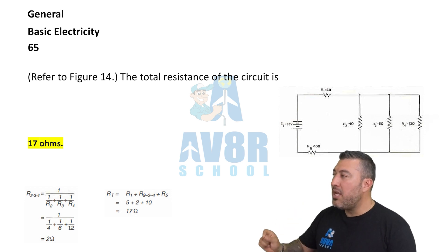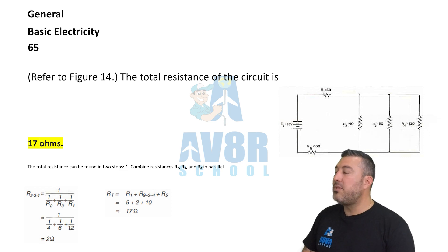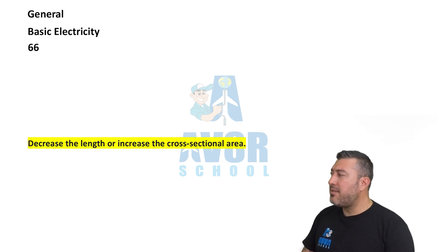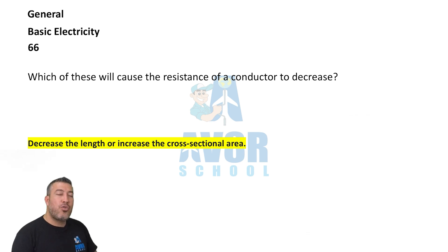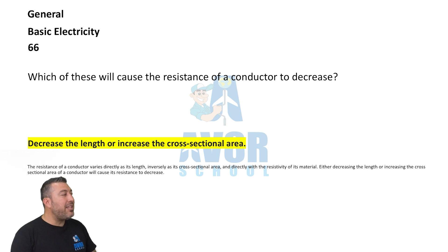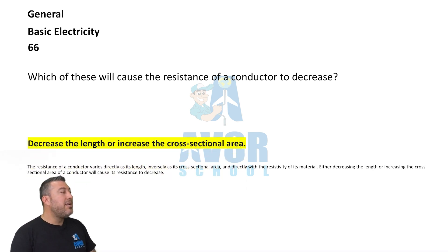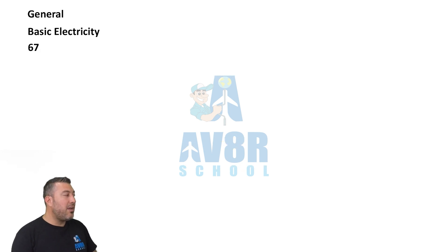In figure 14, the total resistance of the circuit is 17 ohms. 66: Which of these will cause the resistance of a conductor to decrease? Decrease the length or increase the cross-sectional area. When you decrease the length or increase the cross-sectional area, it will cause the resistance of a conductor to decrease.